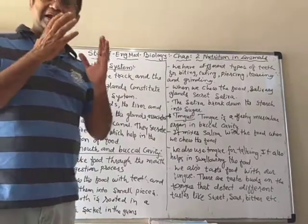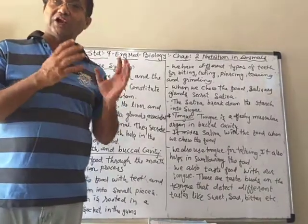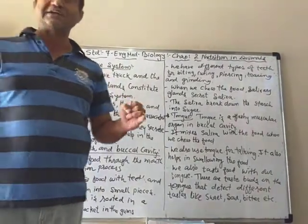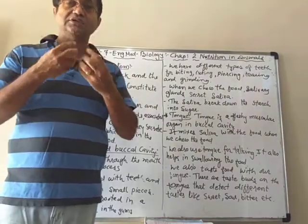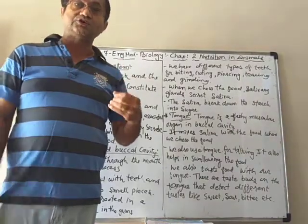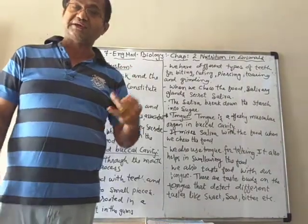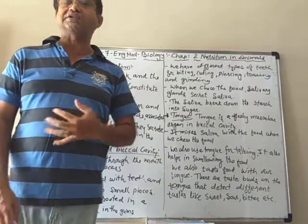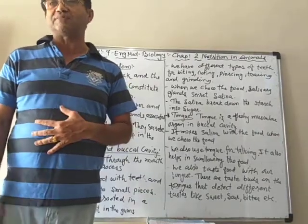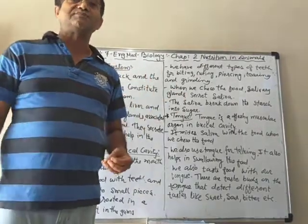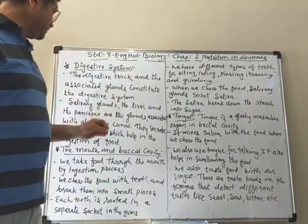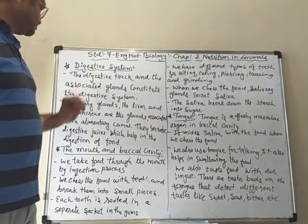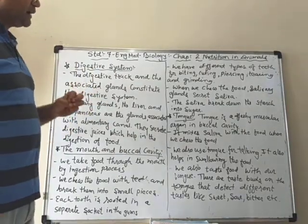So the digestive tract means the alimentary canal along with those three glands — the salivary glands in the mouth, and the other two, the pancreas and the liver, inside the abdominal cavity — they together create the digestive system.